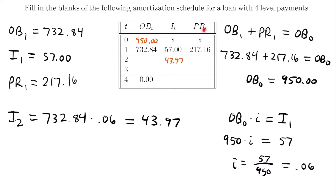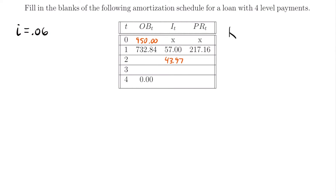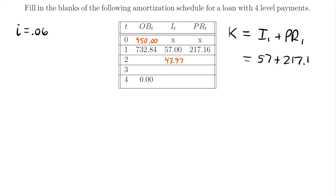Now we need to know the principal repaid at time equals two, but first we need to know the amount of the four level payments. To find the payment amount K, we add the interest at time equals one plus the principal at time equals one, because together they make up the full payment. The payment first covers the interest, and the rest — the principal — is applied to the outstanding balance. So K equals I₁ plus principal at time one, which equals $57 plus $217.16, giving us K equals $274.16.